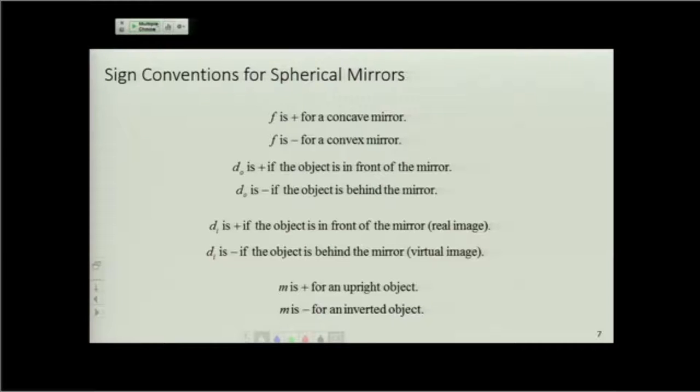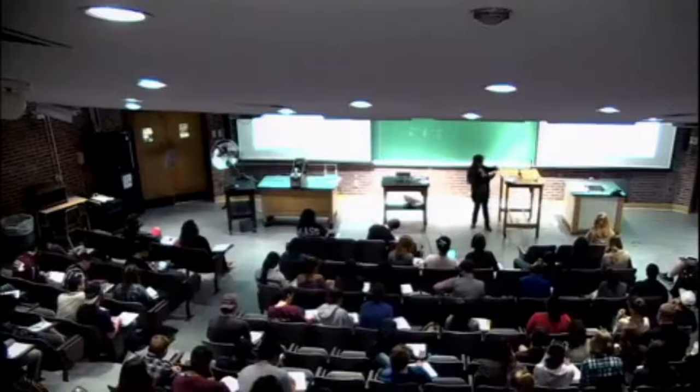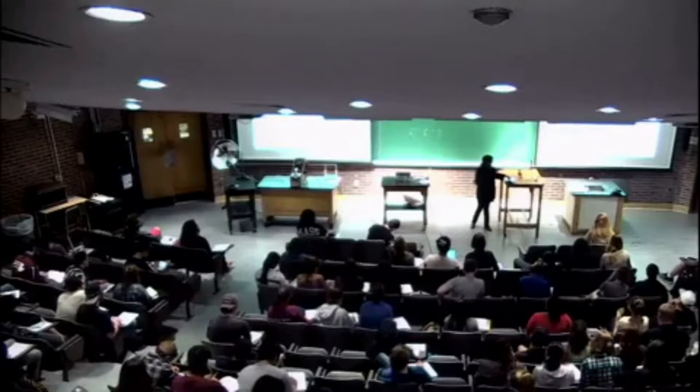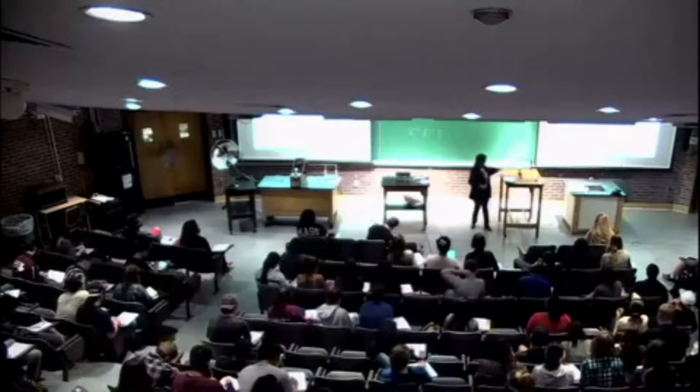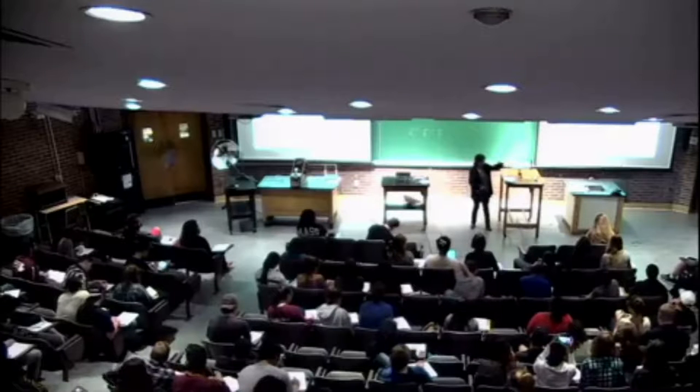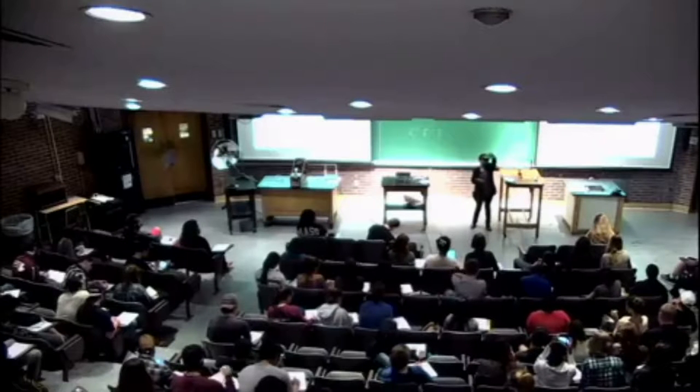you're thinking, when is the object ever behind the mirror? Well, that only happens if I have more than one mirror. So in this case, for example, for the lower mirror, I have the object placed there. When I place this mirror, that object is in front of the mirror,